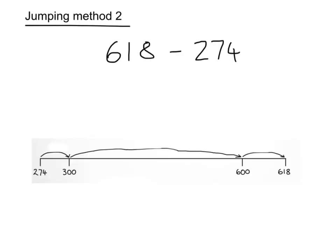The other way I can complete the jumping method is by writing my number 274 by here, and thinking, well how would I get to this end number here, this 618? Well the way I'd get there is get to the next 100s, and then I'd want to get to the next 100s by the 618, and then thinking what do I get from there to there?